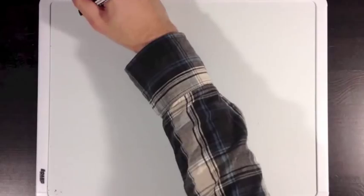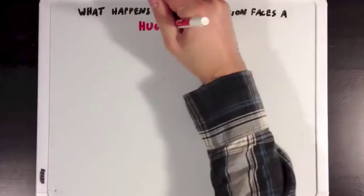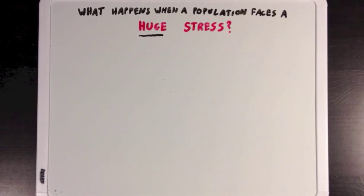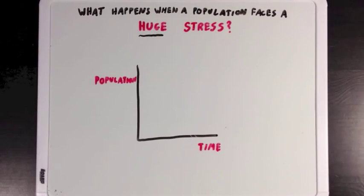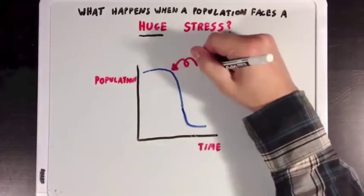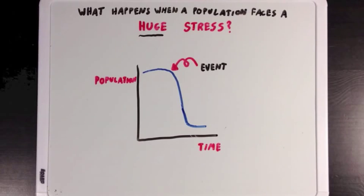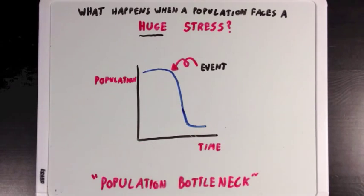Now, sometimes these environmental stresses can be massive, so massive that they almost completely wipe out a population. If you were to make a graph looking at a population size over time, you'd see a huge dip from this environmental stress. And we call these population bottlenecks when the stress wipes out so much of the population that only a tiny fraction remains.